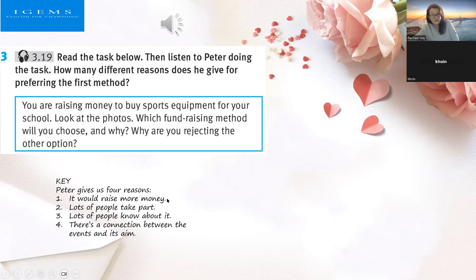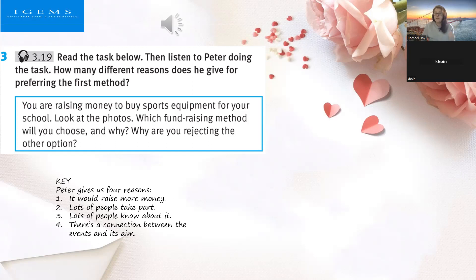Peter gives us four reasons: it would raise more money; lots of people would take part; lots of people will know about it; and there's a connection between the event and the aim. Number four means that because their aim is to raise money for sports equipment, it connects with having a sport type of fundraiser.